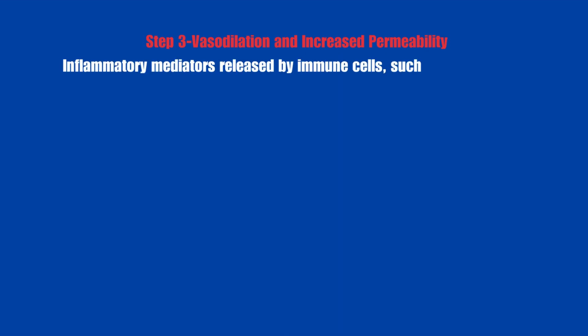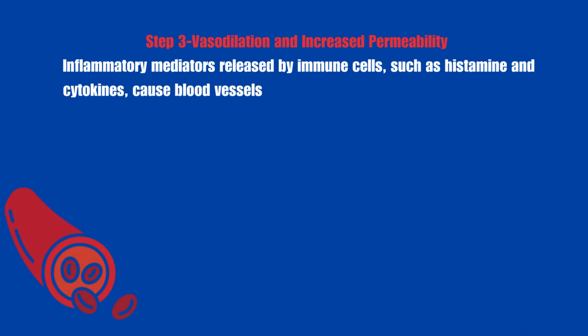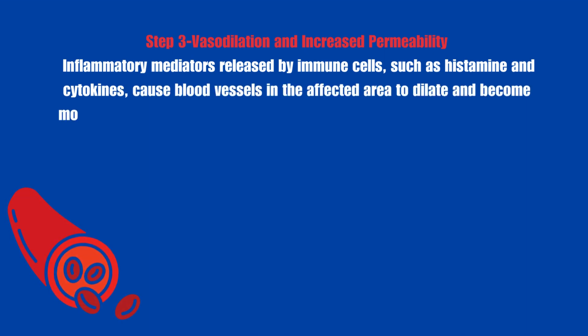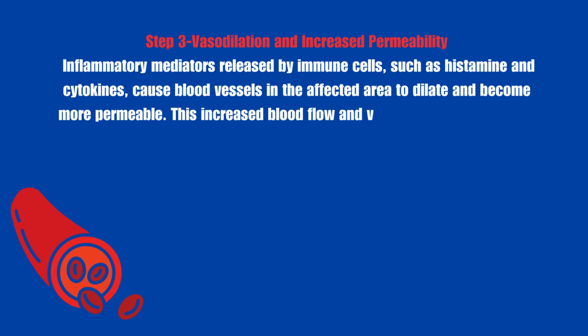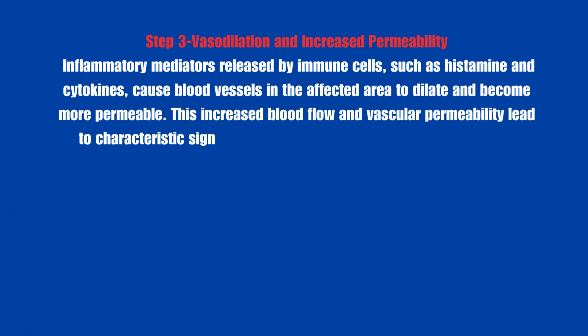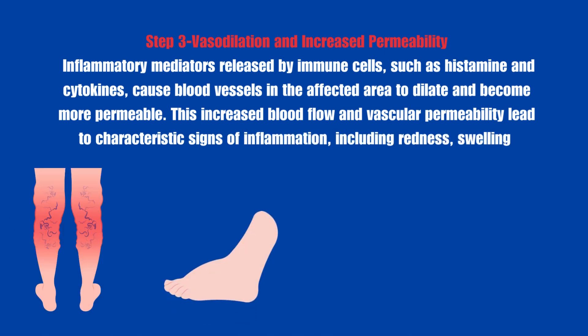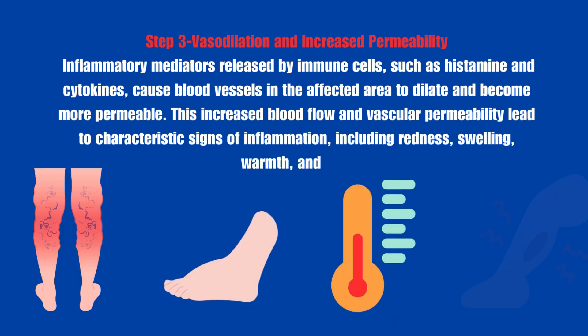Vasodilation and Increased Permeability: Inflammatory mediators released by immune cells, such as histamine and cytokines, cause blood vessels in the affected area to dilate and become more permeable. This increased blood flow and vascular permeability lead to characteristic signs of inflammation, including redness, swelling, warmth, and pain.